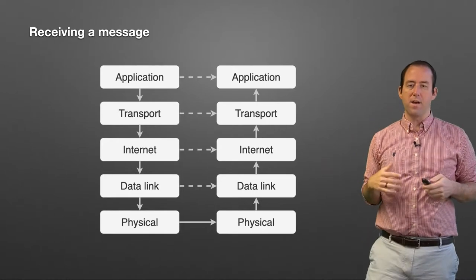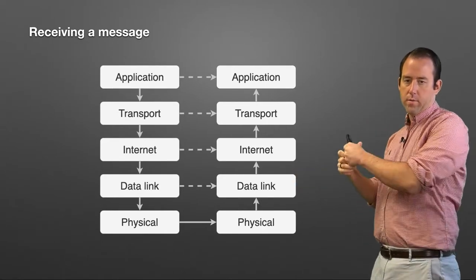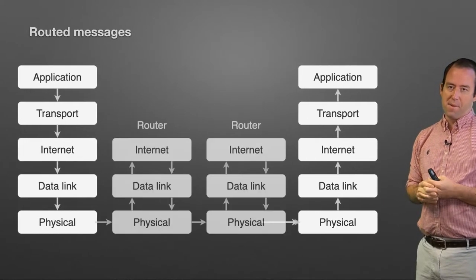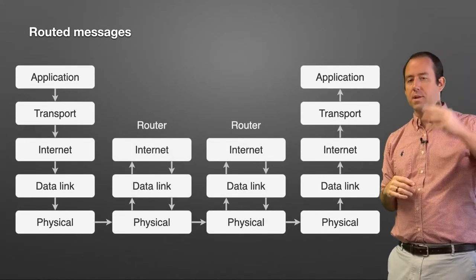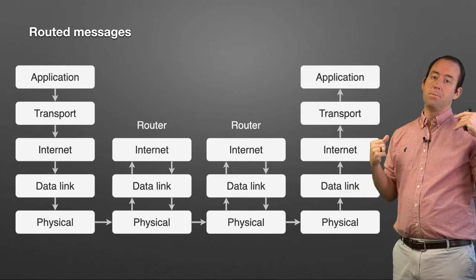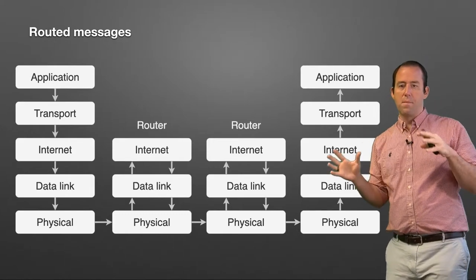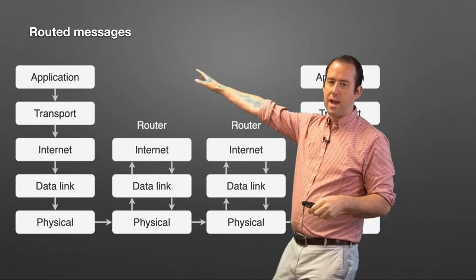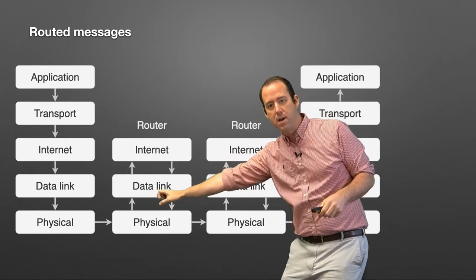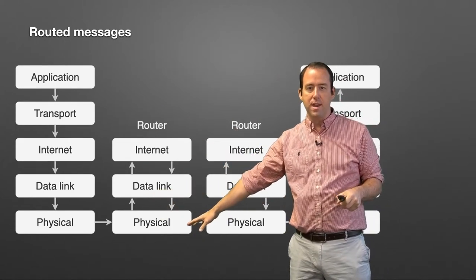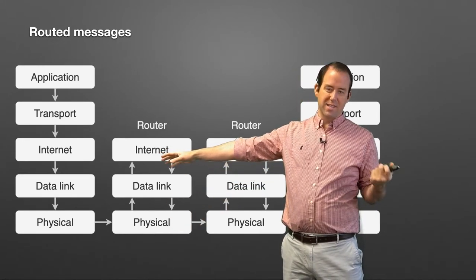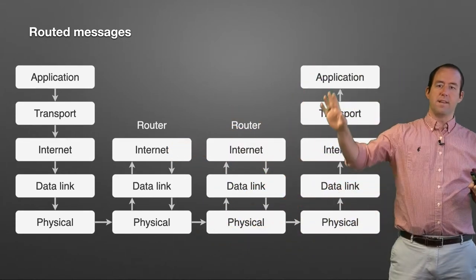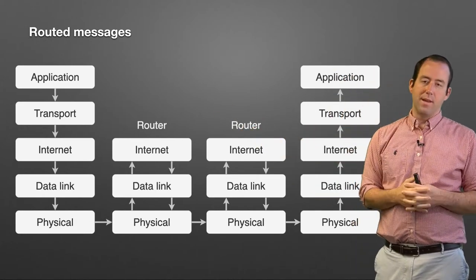In a more complicated network with routers forwarding and routing information, here is how that looks. Routers don't involve the transport layer or application layer because they are layer-three devices operating at the network or internet layer. As a packet moves down the stack, it travels across the physical layer to the next router along the path, goes up to the internet layer to find the next hop, then back down and over to the next router — repeating this process through multiple routers until it finally reaches the destination.